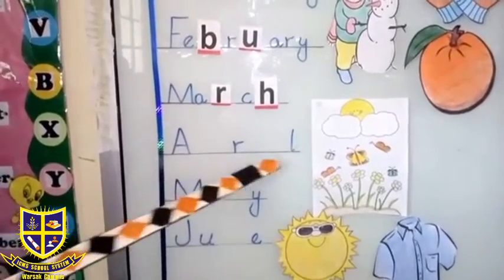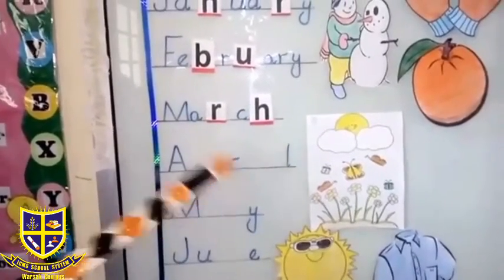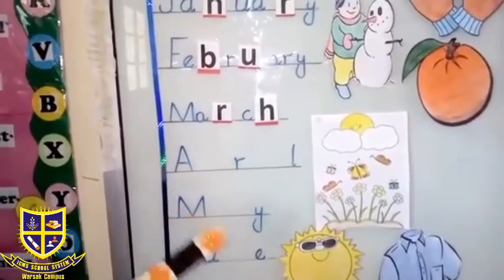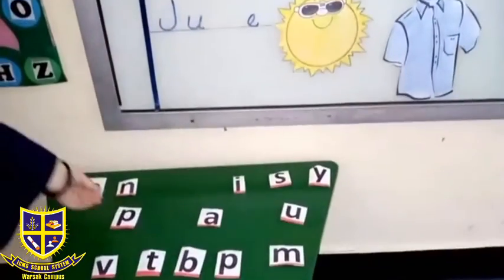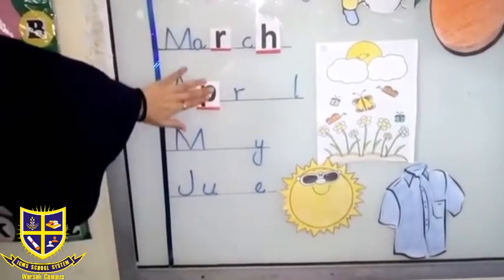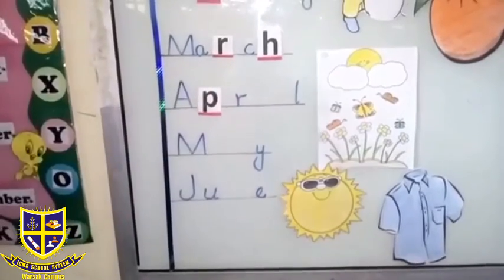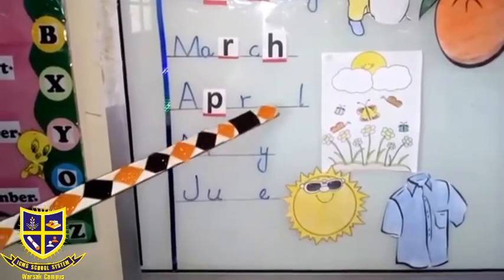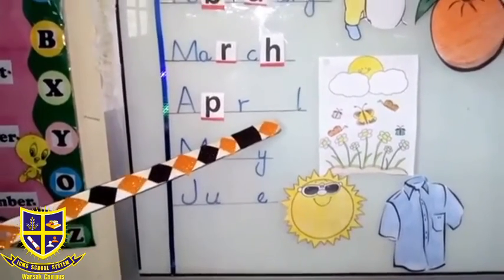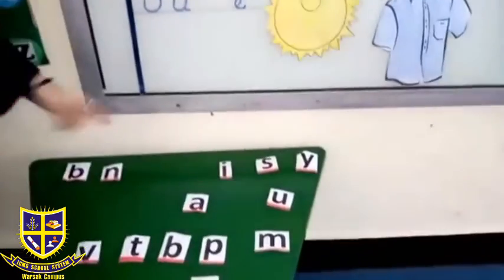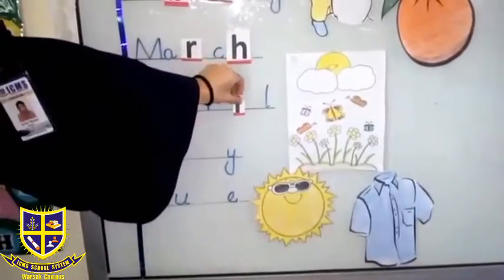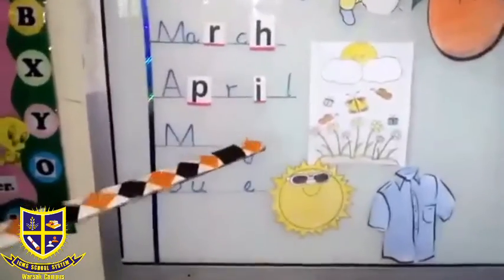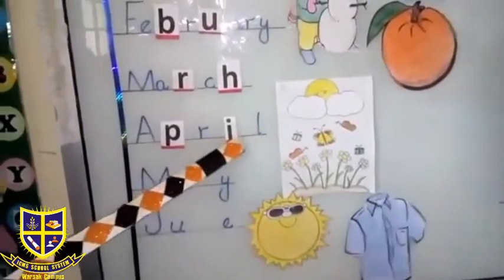April. April. The missing alphabet — we will paste it. We have to write A. This is A — April. We will write April.